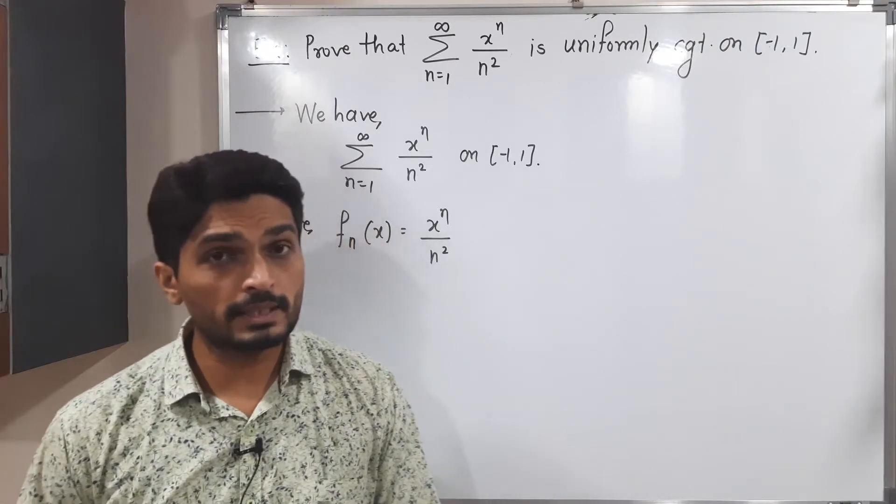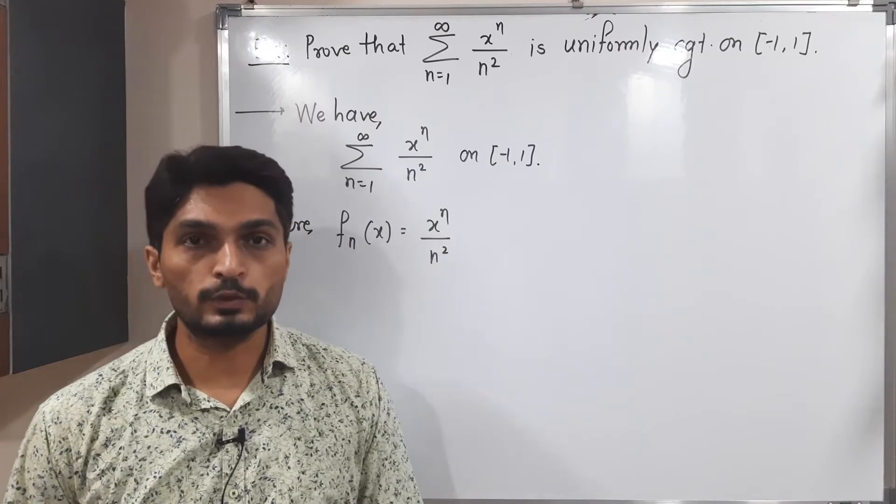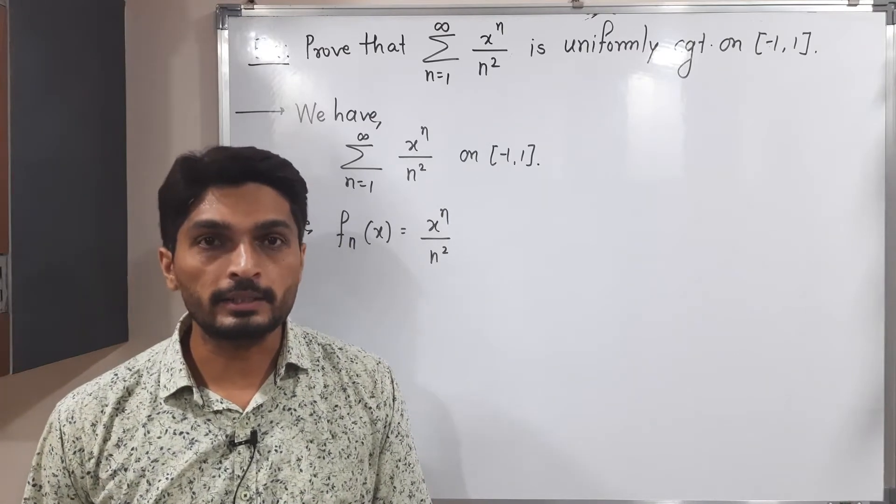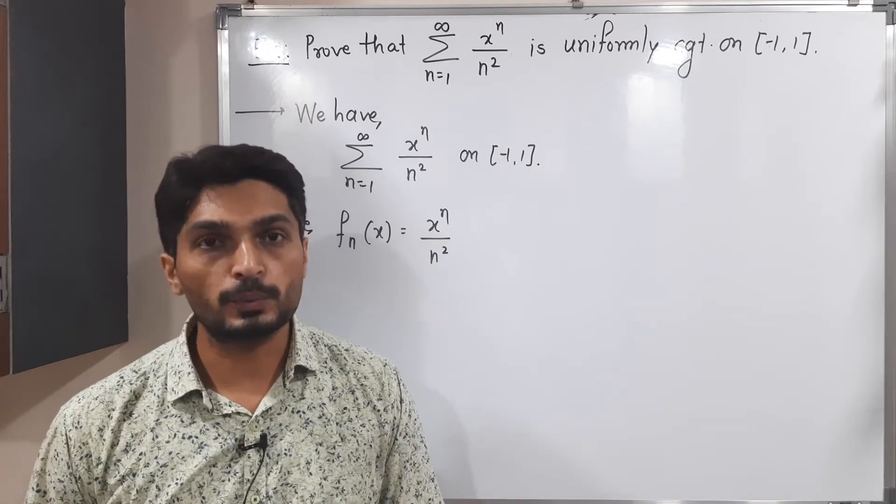Let us discuss this example. We have a series of functions summation x raised to n upon n square. We have to prove that it converges uniformly on the closed interval minus one to one.